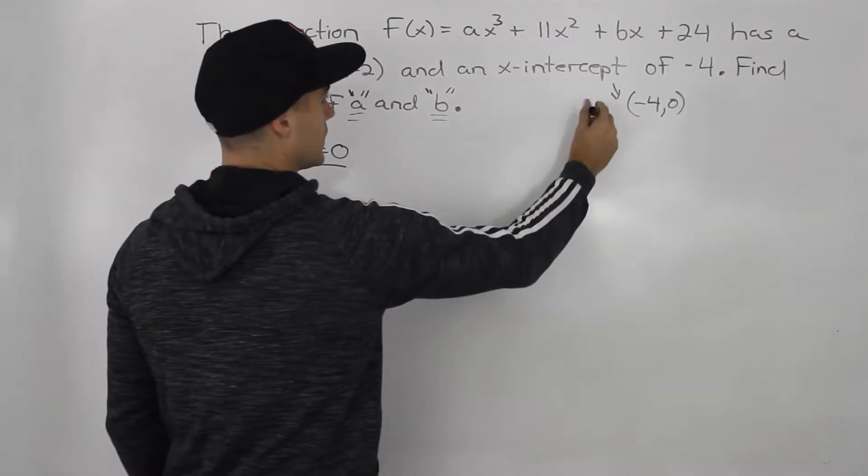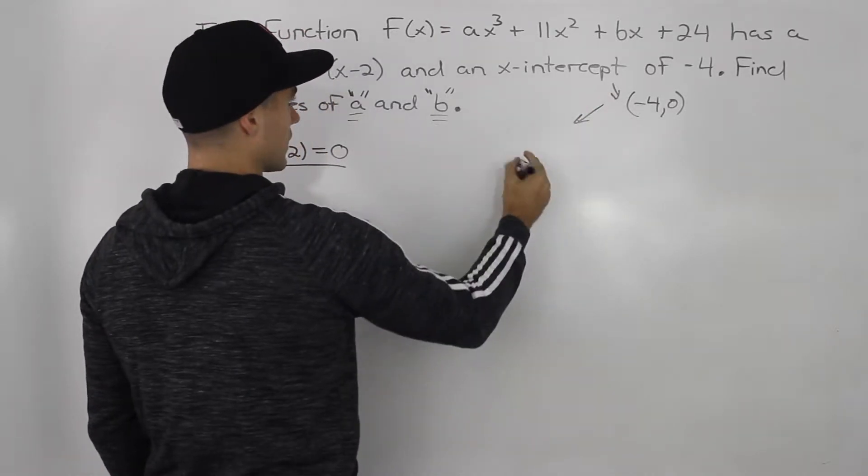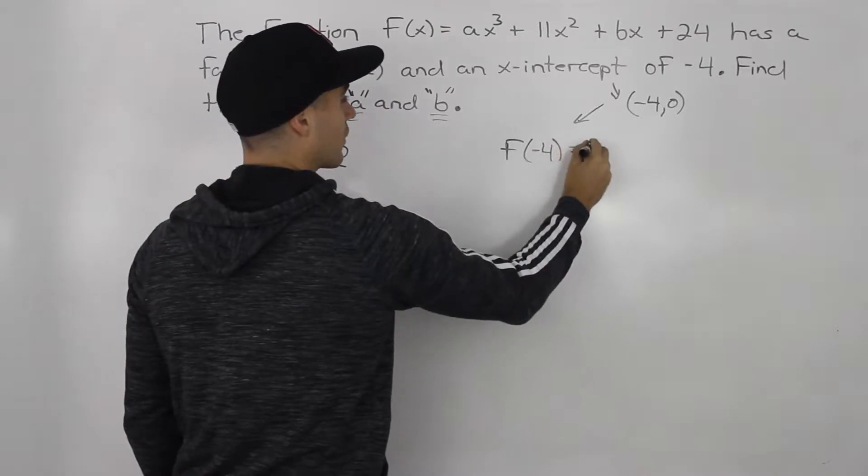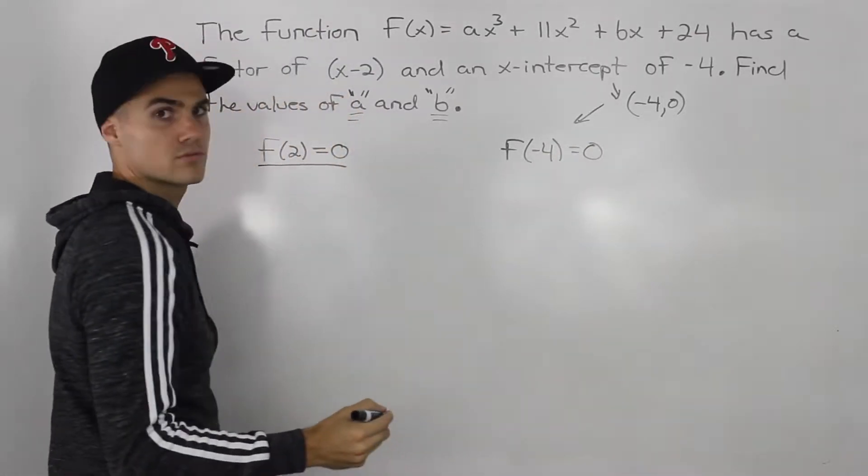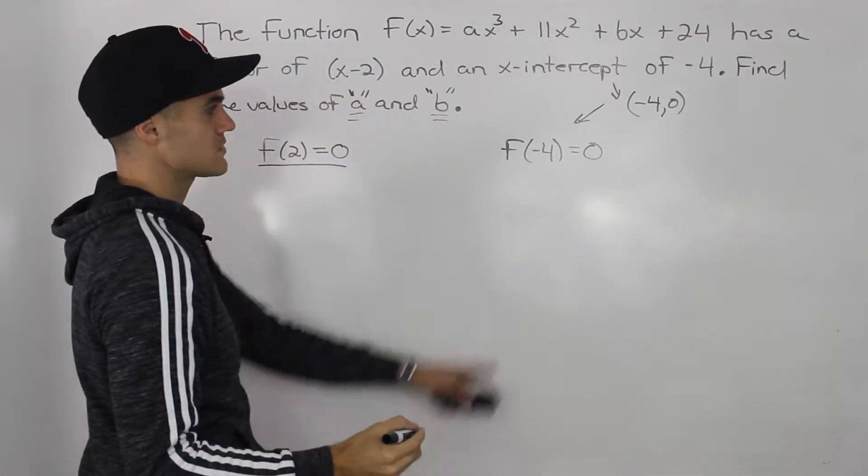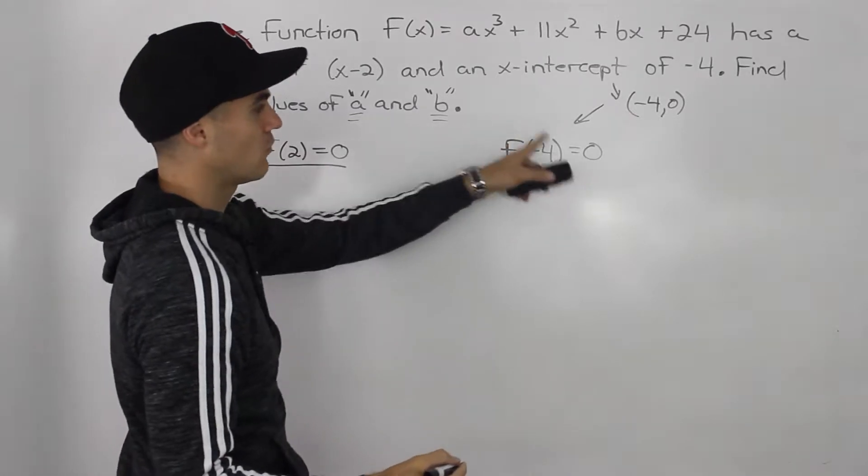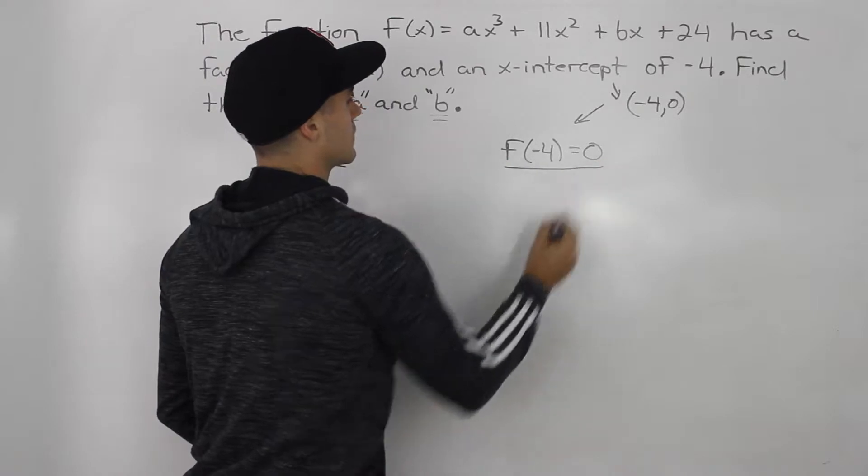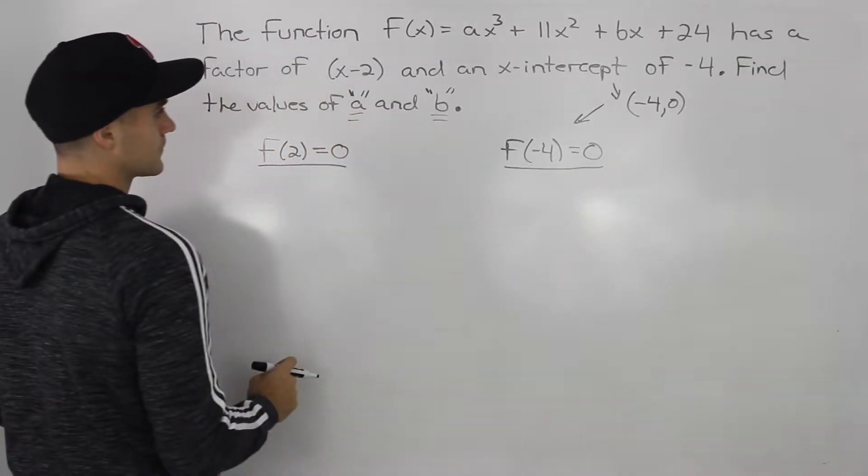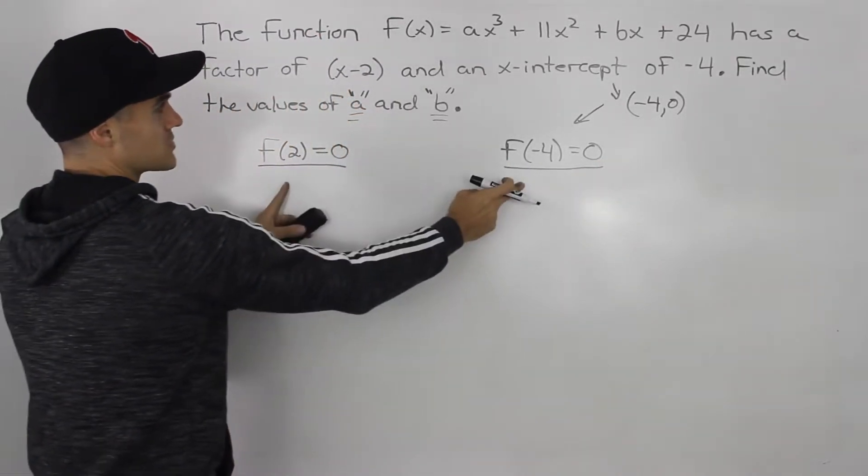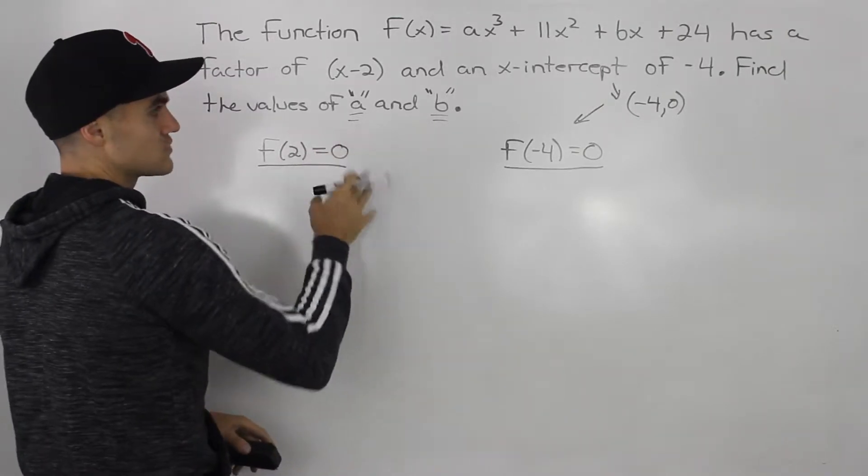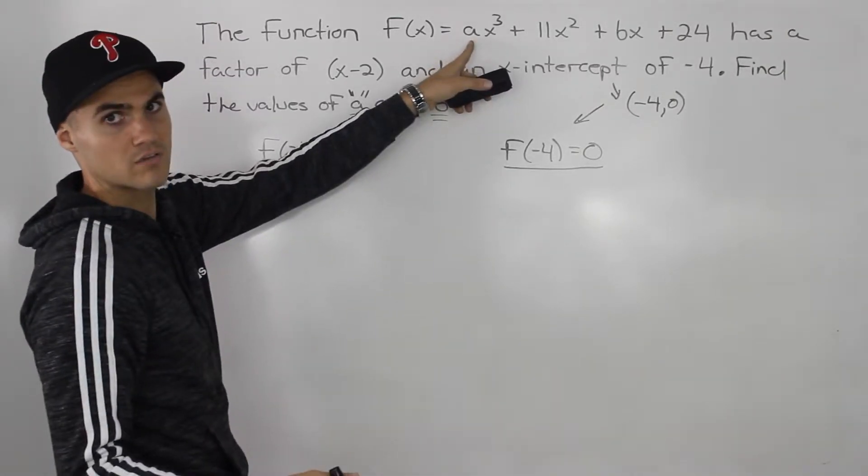So we can show this coordinate with this expression, f(negative 4) is equal to 0, right? So at an x value negative 4, the y value of the function is going to be 0. And now what we can do, we have two expressions.